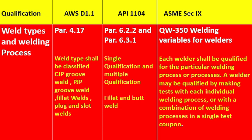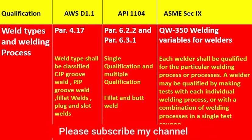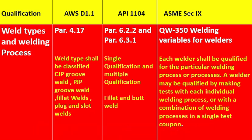In API 1104 para 6.2.2 and para 6.3.1, there are two types of qualification: single qualification and multiple qualification. There are two weld types: fillet weld and butt weld. For single qualification, a welder shall make a test using a qualified procedure to join pipe, nipple, or segment of pipe nipple. For multiple qualification, the welder must successfully complete two tests using a qualified procedure.